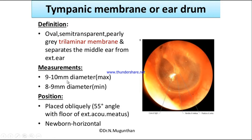Now let us see the measurements of the tympanic membrane or eardrum. The diameter is 9 to 10 millimeters at maximum and 8 to 9 millimeters at minimum. These are the measurements of the tympanic membrane.